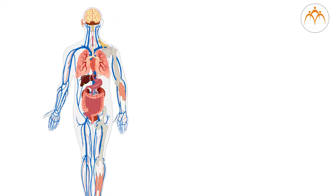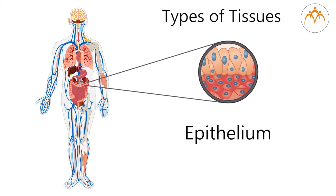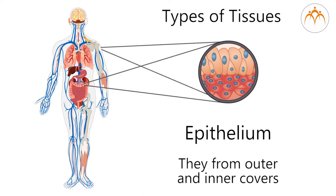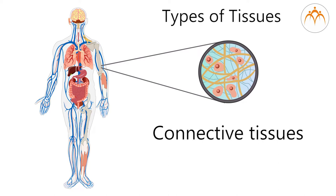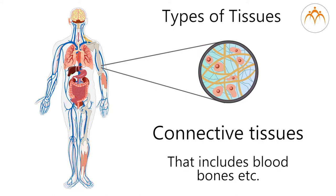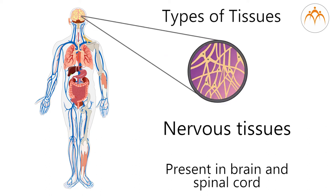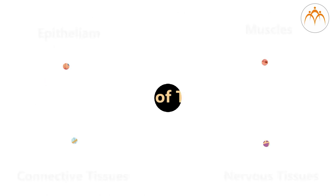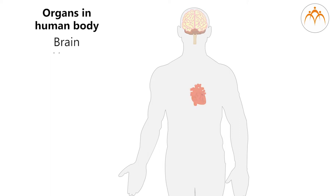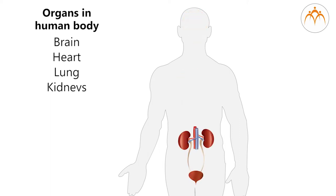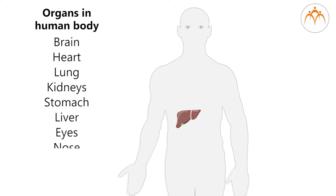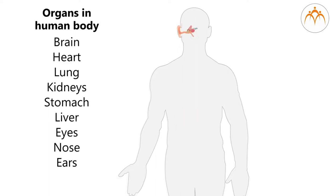In the human body, there are four major types of tissues. One, epithelium — they form outer and inner covers. Two, connective tissues, which include blood, bones, etc. Three, muscles. Four, nervous tissues present in the brain and spinal cord. These four types of tissues give rise to various organs like brain, heart, lung, kidneys, stomach, intestine, liver, eyes, nose, ears, etc.